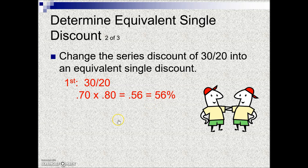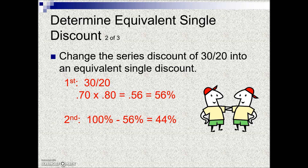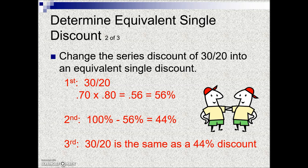What savings are they getting with this series discount? We find the complement of this product of complements. So 100% minus 56% means 44% is equivalent as a single discount to the series discount of 30% with an additional 20%.